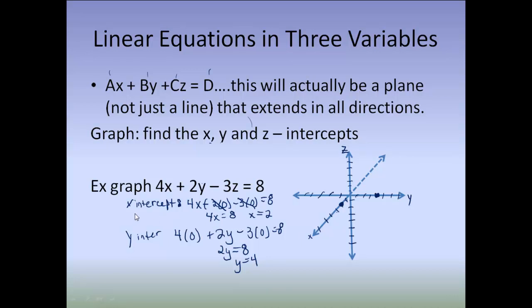And then finally do it with your Z intercept. I'm going to set my X to 0. I'm going to set my Y to 0, which leaves me to solve it out for Z. So, I end up with negative 3Z is equal to 8. So, Z is equal to negative 8 thirds. So, then I'm going to come over here and I'm going to plot my negative 8 thirds.